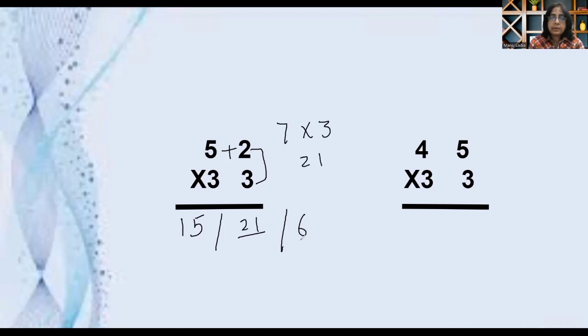6 is single so we don't have to do anything. 21 is in two digits, so just carry this 2 here. 15 plus 2 it will become 17.